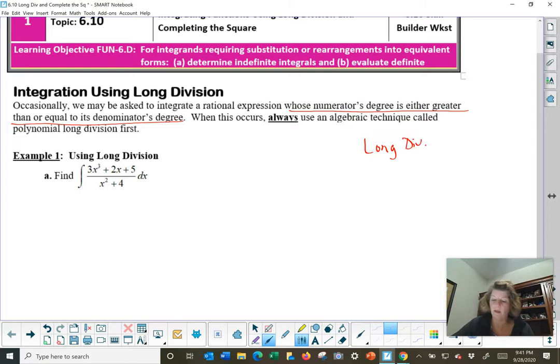I've got x squared plus 4 into 3x cubed plus 2x plus 5. So I asked myself how many times will x squared go into 3x cubed, and the answer to that question is it will go in there 3x times. I want the product of these two to match exactly that dividend. So that's going to be perfect. I'm going to take 3x times x squared. That gives me 3x cubed.